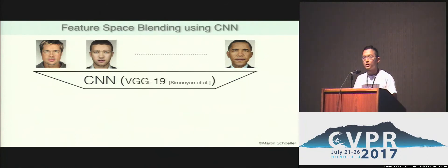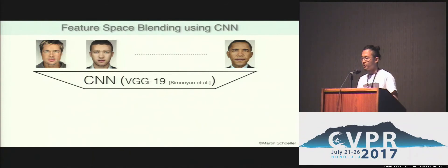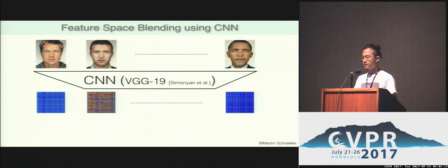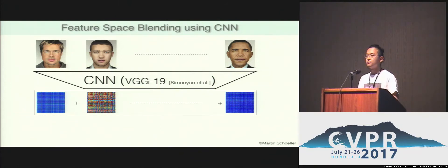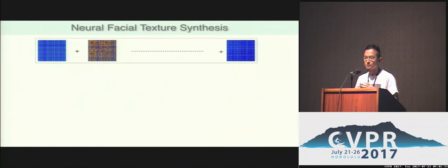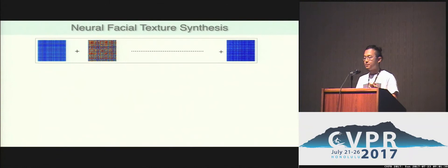So, in this work, we present a new approach to model facial texture using deep neural networks. We use pre-trained VGG-19 and use it to extract feature correlations known as gram matrices. Once we compute gram matrices for all subjects, we can model a texture using a linear subspace of feature correlations instead of the image itself. Given a new feature correlation, we can back-propagate and update texture using gradient descent.